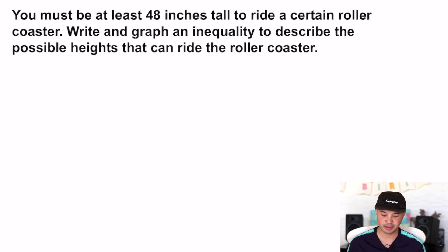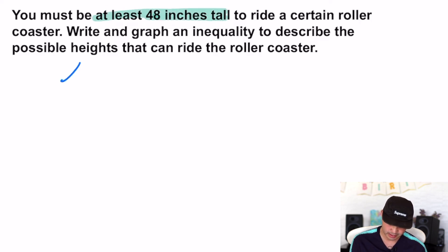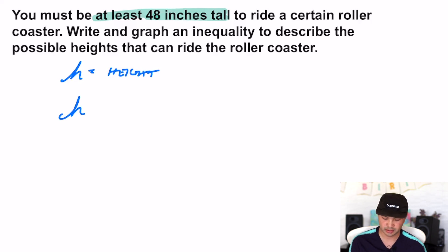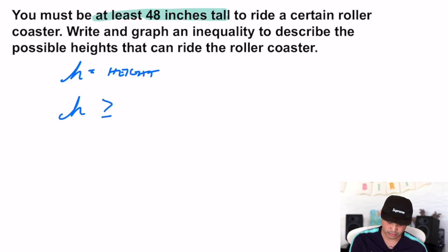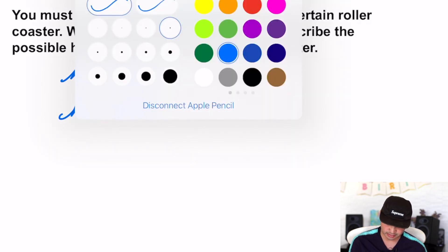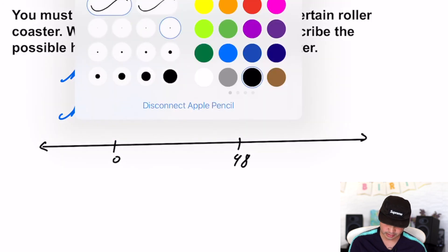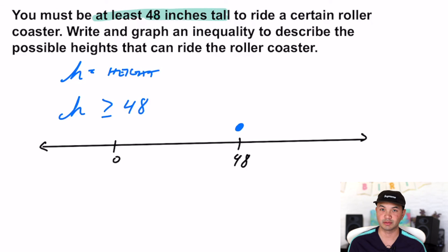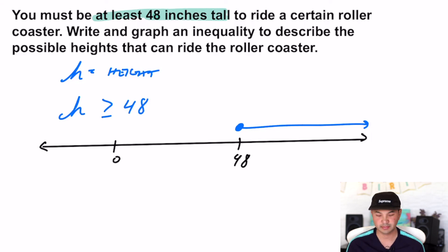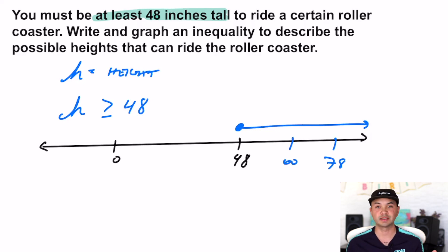You must be at least 48 inches tall to ride a certain roller coaster. Write and graph an inequality describing possible heights. Let H stand for height. Your height has to be at least 48 inches tall — meaning 48 inches or taller — so it's greater than or equal to 48: H ≥ 48. To graph this, put zero and 48 on the number line. You can be exactly 48 inches and ride the roller coaster, so it's a closed circle going to the right. If you're 60 or 78 inches tall, you can still ride.